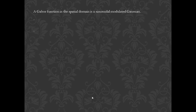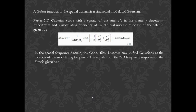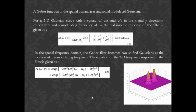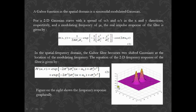A Gabor filter in the spatial domain is essentially a sinusoidal modulated Gaussian. The impulse response of this 2D Gaussian filter can be shown in this equation, where sigma_s and sigma_y are the standard deviations. In the spatial frequency domain, however, the Gabor filter becomes a two-shifted Gaussian function at the locations of the modulating frequency. This equation shows the 2D frequency response of the filter that is graphically shown in the right-hand side figure.